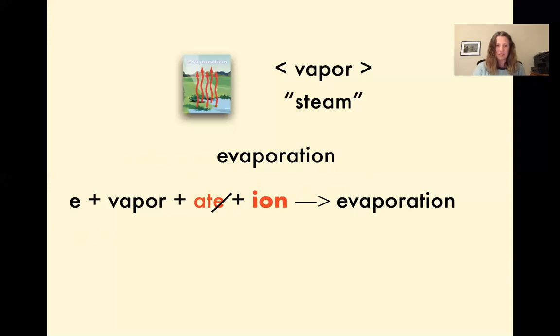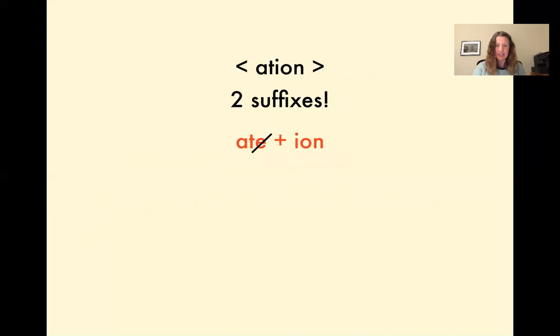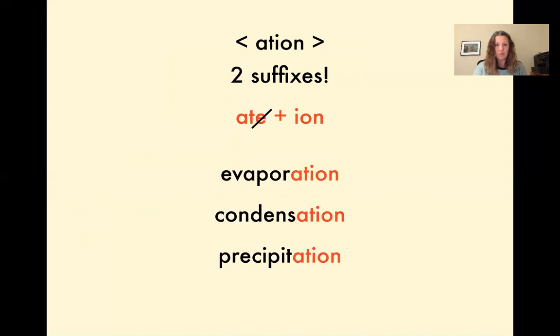So it turns out that A-T-E and I-O-N, the Asian, that A-T-I-O-N is actually two suffixes working together. A-T, replace the E and I-O-N. And we see this in a lot of words. What about those other words we were wondering about? Condensation, precipitation.